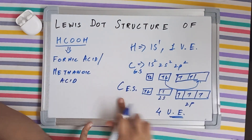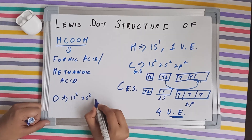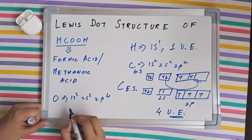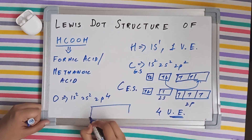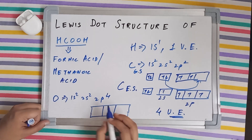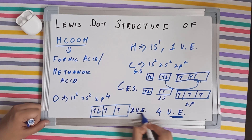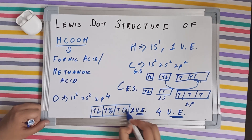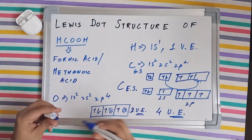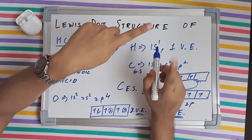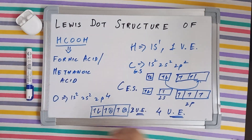Talking about oxygen, its electronic configuration is 1s2 2s2 2p4. The 2p subshell has three orbitals, and with four electrons placed in them, oxygen has two unpaired electrons — meaning it needs two more electrons to complete its deficiency. So in summary: hydrogen makes one bond, carbon makes four bonds, and oxygen makes two bonds.